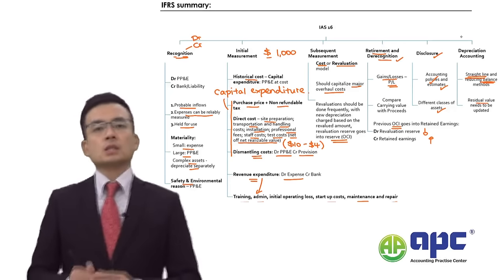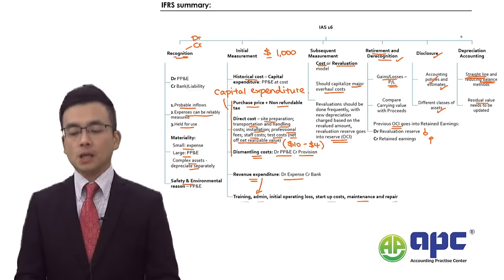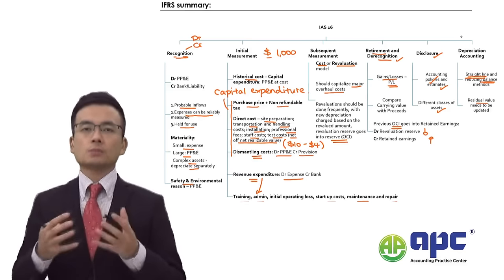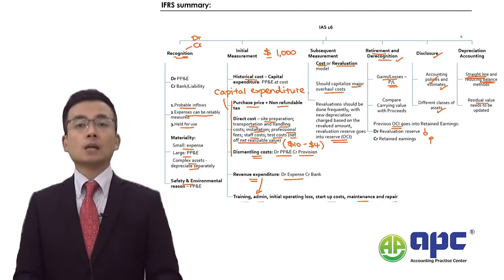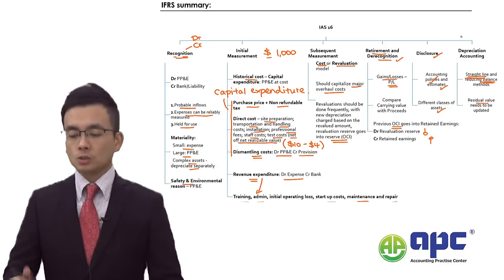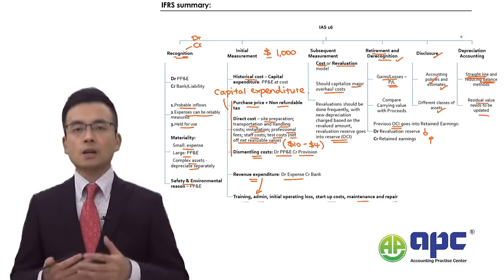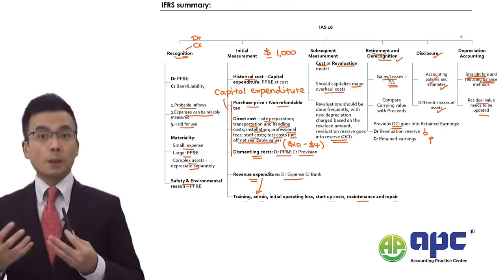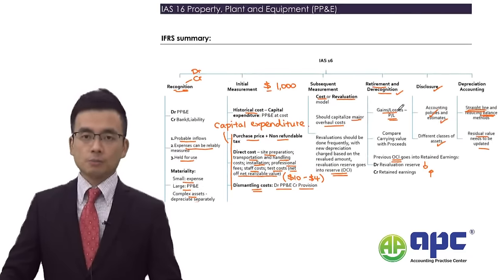Regarding residual value, when buying the asset and at each subsequent reporting period, the business needs to estimate the residual value if it is material. For higher-value assets such as factories and aircraft, residual values should be significant. The frequency of review varies — some businesses review annually, others every six months — depending on jurisdiction, industry, and company policy.